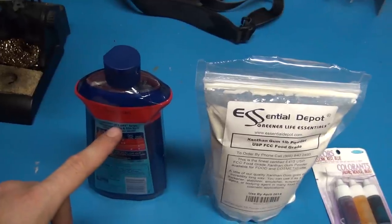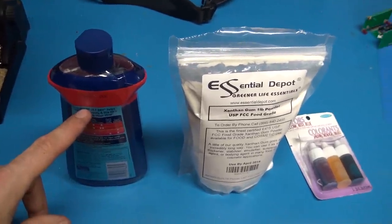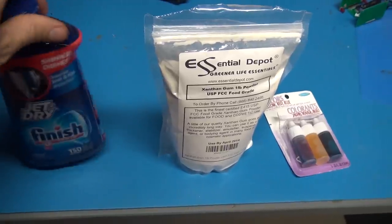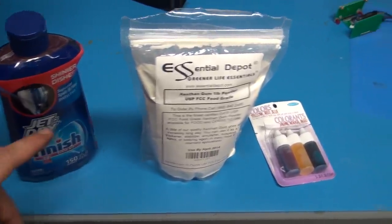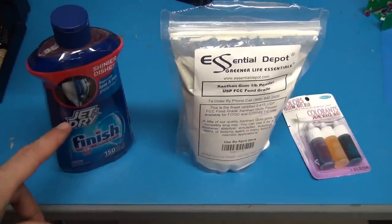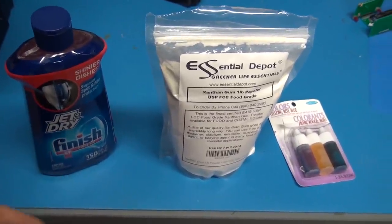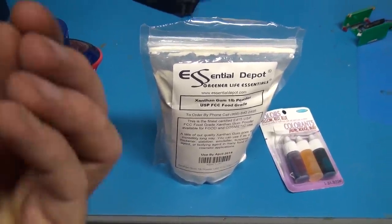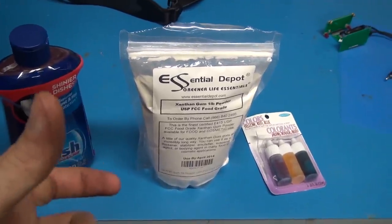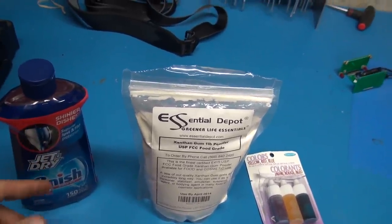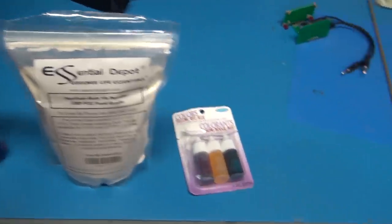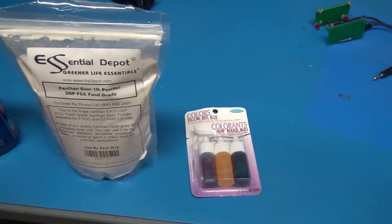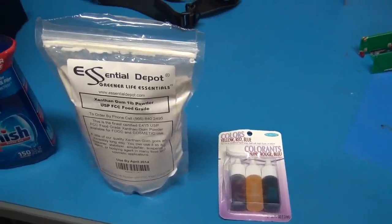And then also to the liquid that's going into the valve sensor I put this jet dry. This is for your dishwasher. Basically it reduces the surface tension of the water, making the water droplets rebound higher. So the thickness sort of slows down the action and then this sort of makes the liquid slipperier so it can rebound higher. And then just any kind of food coloring. I used red in this case.